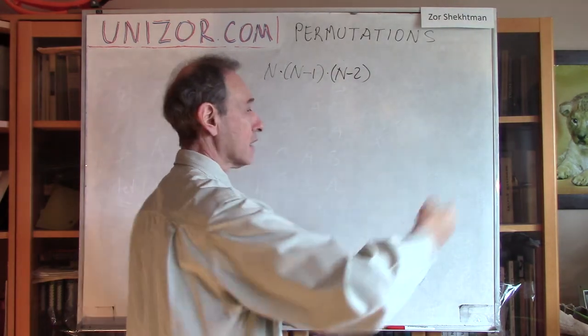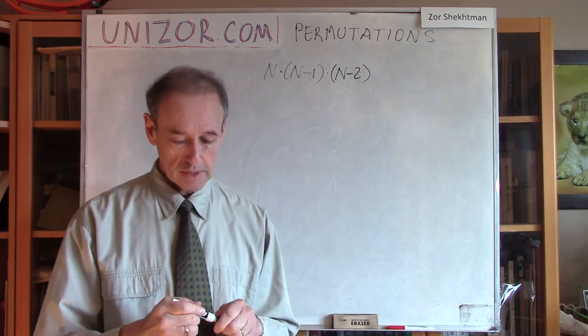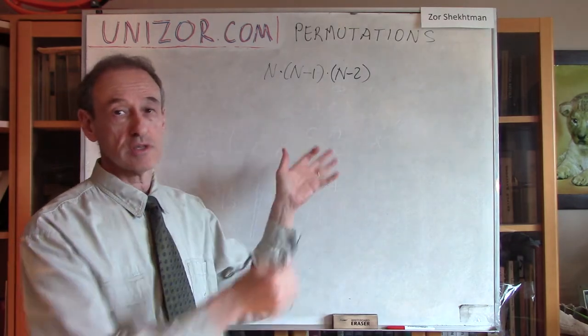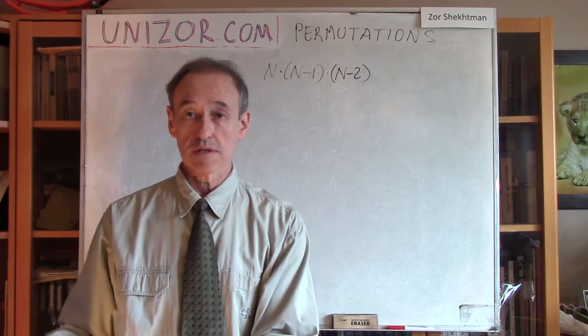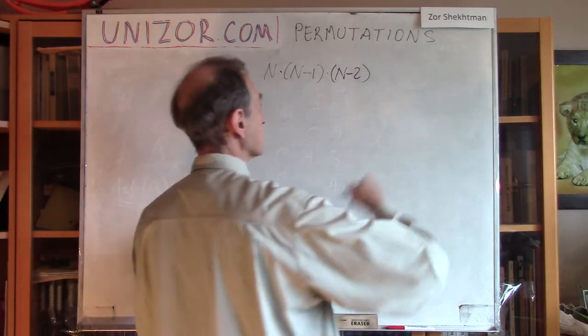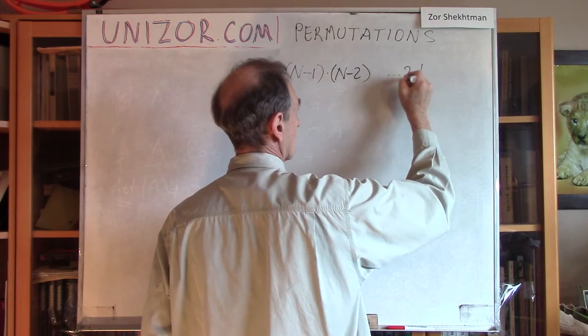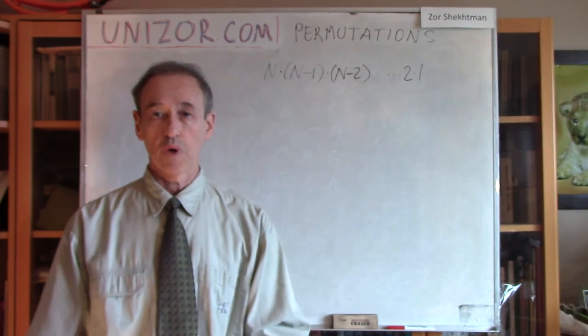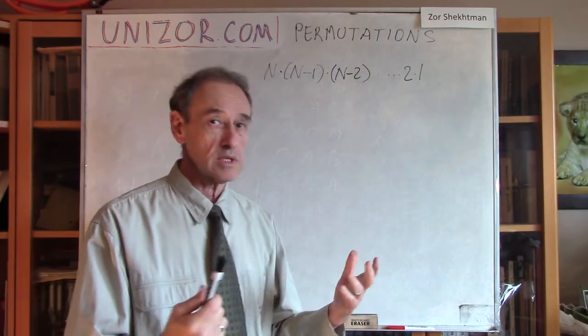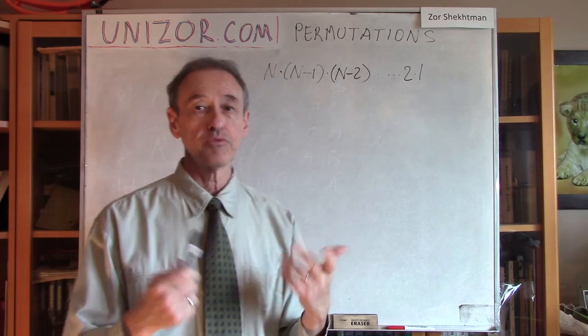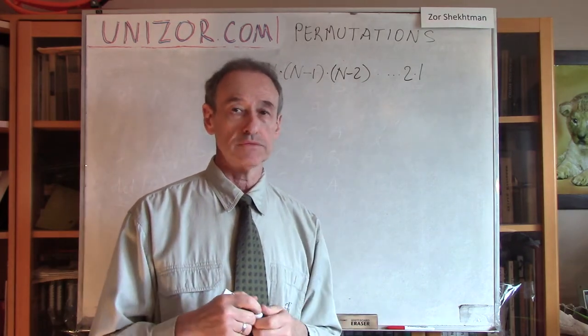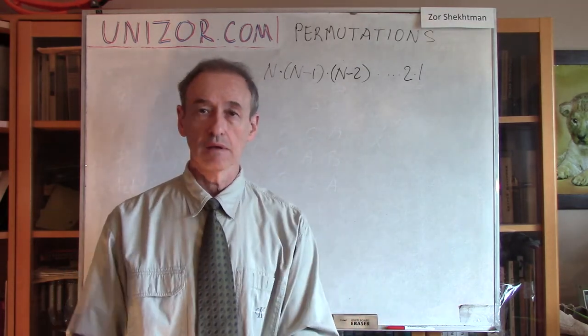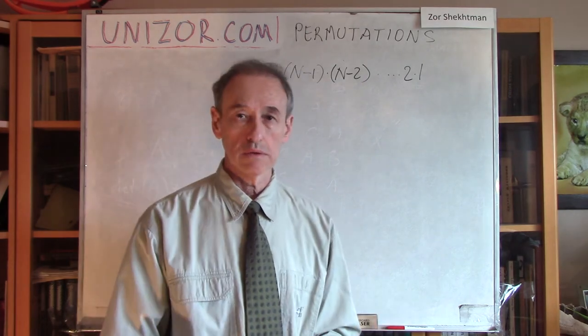We are continuing this process, and we are multiplying the number of our choices, because with every number of choices we made already, we still have so many choices to make for the next step. It goes up to the very last one. The one before last, we had two choices left, and then there is only one. So it looks like this might be the formula for the number of permutations of N objects, the number of ways we can order these N objects into one row.